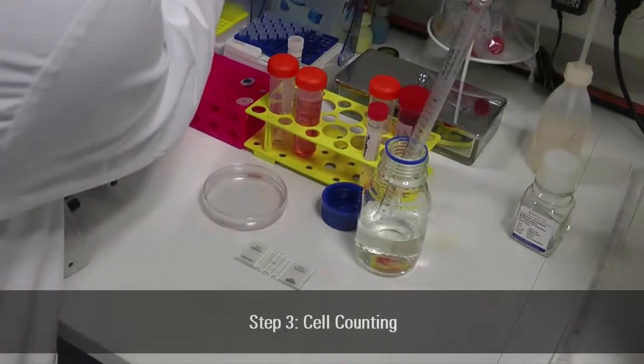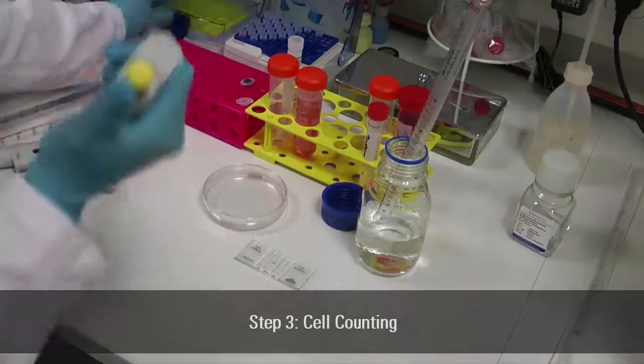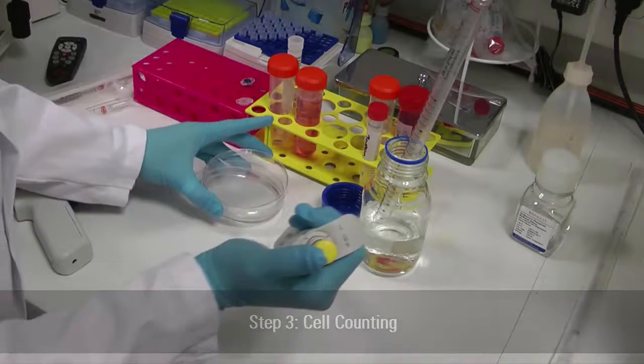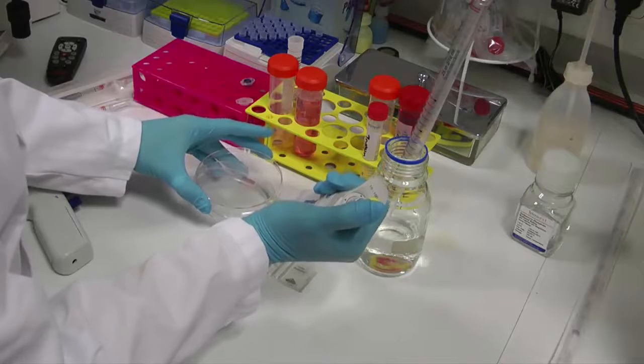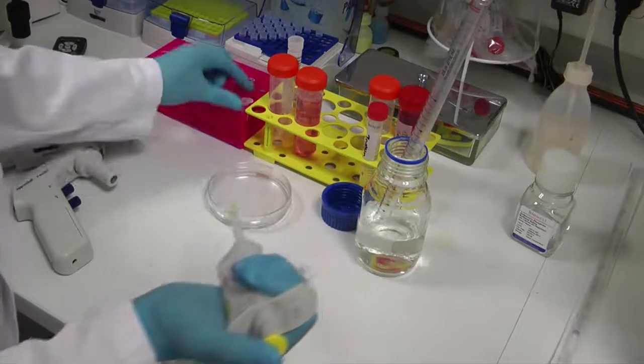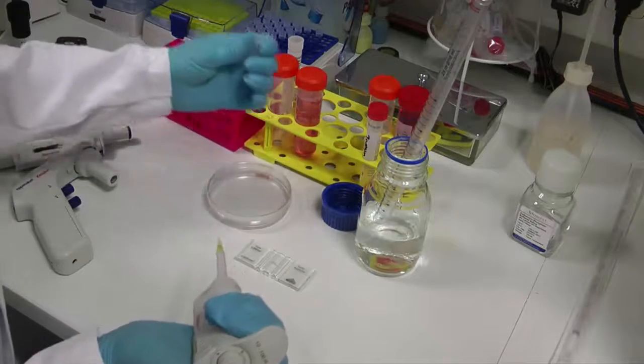Mix 100 µL cell suspension with an equal amount of 0.4% trypan blue solution. Trypan blue selectively penetrates cell membranes of dead cells and stains them blue, but is not absorbed by living cells.